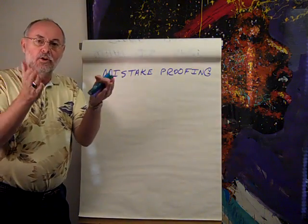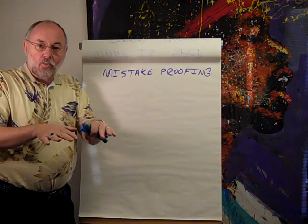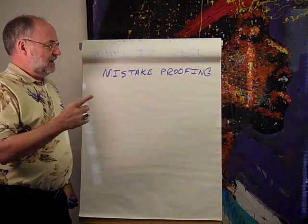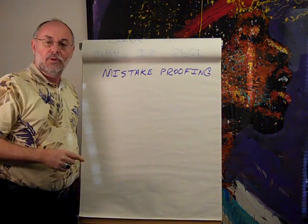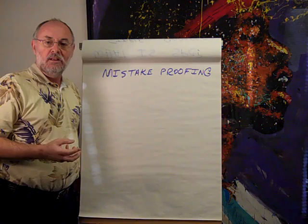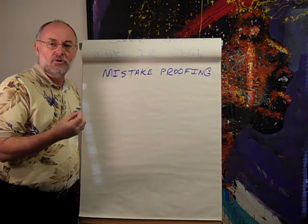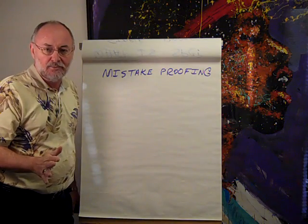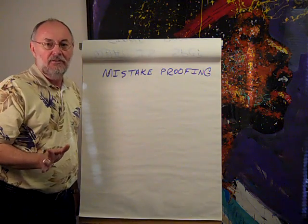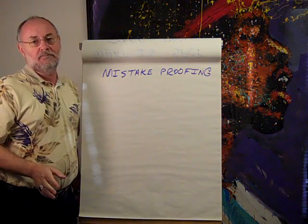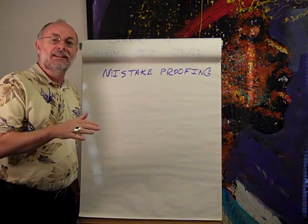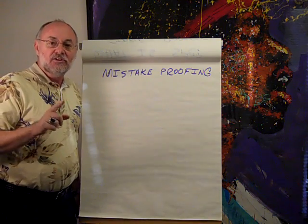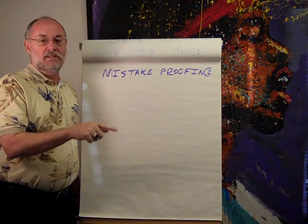Once we've narrowed our focus and figured out what we want to improve — where the problem is and what the root cause is — the concept we want to employ is mistake proofing. How would we come up with a countermeasure, a solution, that would make it absolutely impossible for a human being to make this mistake? Remember, systems let people make mistakes. People do not make mistakes. Systems let people make mistakes.